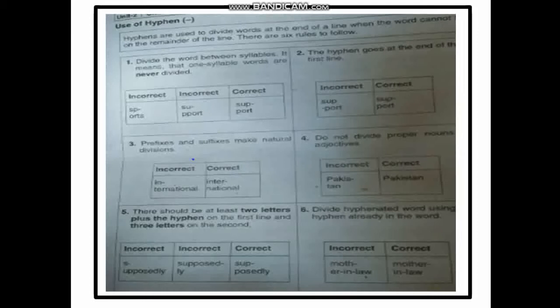So 'sup-' with the hyphen on the first line and 'posedly' on the second is acceptable, while 'suppose-' and 'dly' is not acceptable. Rule six: divide hyphenated words at the existing hyphen. For example, 'mother-in-law' should keep 'mother' on one line and 'in-law' on the next, which is the correct and acceptable form.